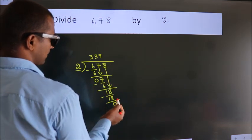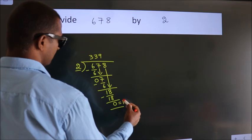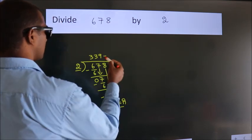No more numbers to bring it down. So we stop here. This is our remainder. This is our quotient.